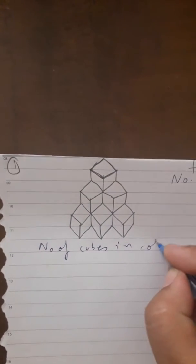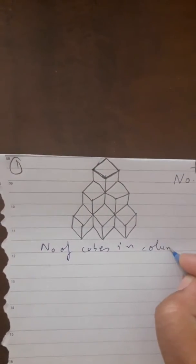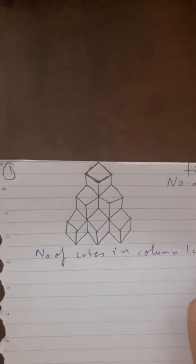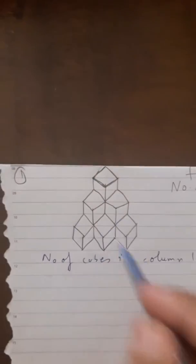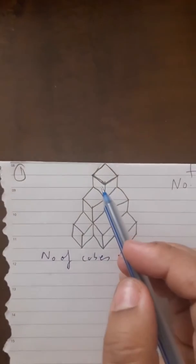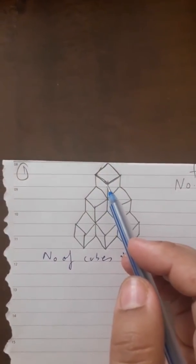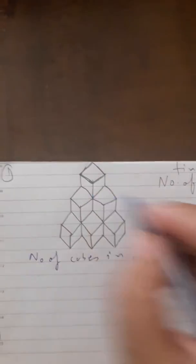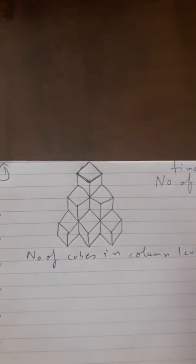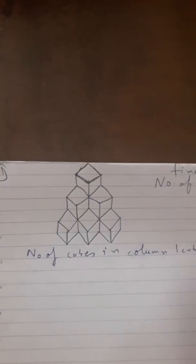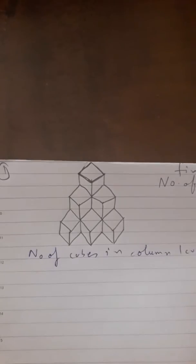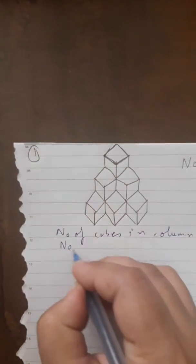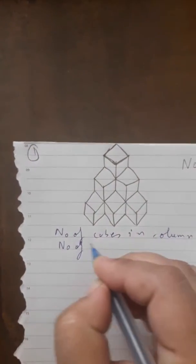First we will find how many columns have one cube. You can see one cube here and here — three columns have one cube each, so that is three into one.